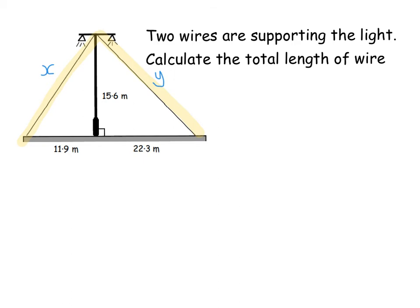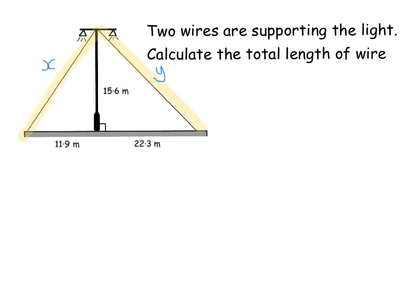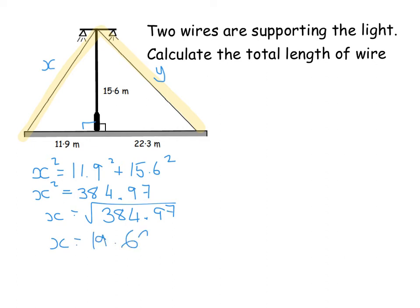Okay. So using the triangle on the left hand side, the one with the X, I'm going to do X squared equals 11.9 squared plus 15.6 squared. And when you work that out, you get 384.97. And when you square root that, you get 19.62.